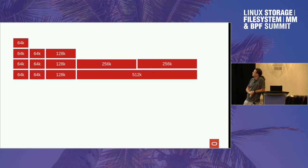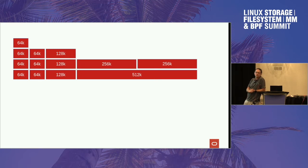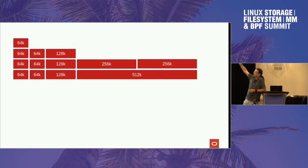So I think we have a bunch of problems to solve with readahead, and it affects all of us. I'm going to say the F word — folios play into this a bit, because the use of larger folios is driven by readahead right now, and only readahead at this point. The larger the readahead gets, the larger the folios we create.